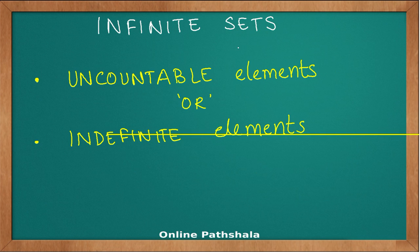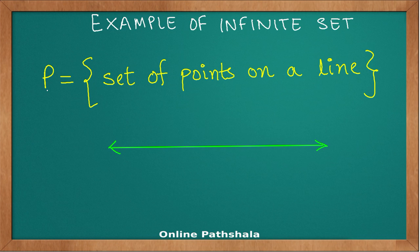Uncountable, or you can also say indefinite elements, which means that you just cannot put a definite number to the elements in that set. Let us look at some examples. Let us say that we have a set P which consists of the set of points on a line.